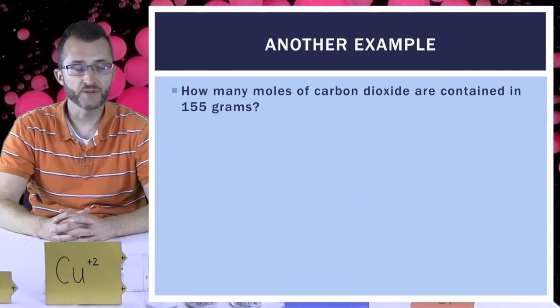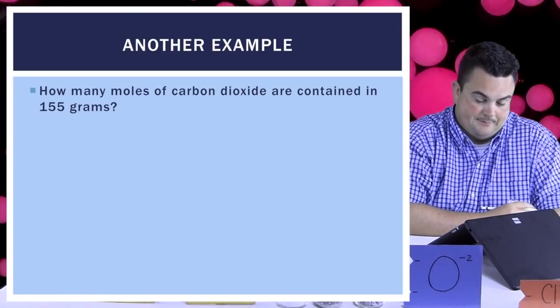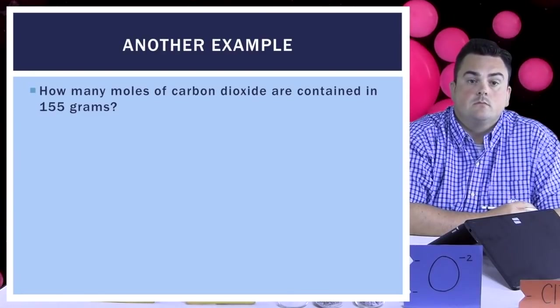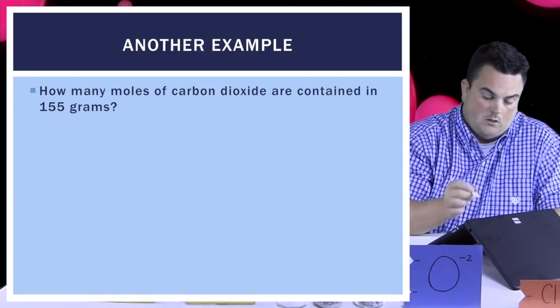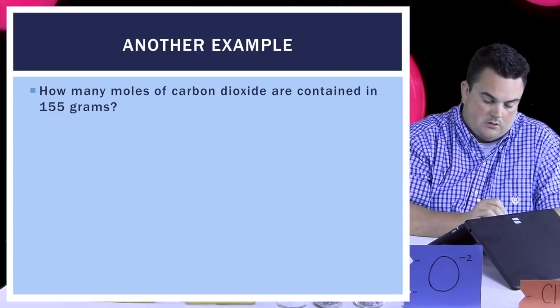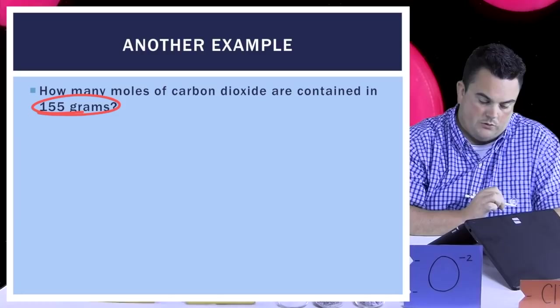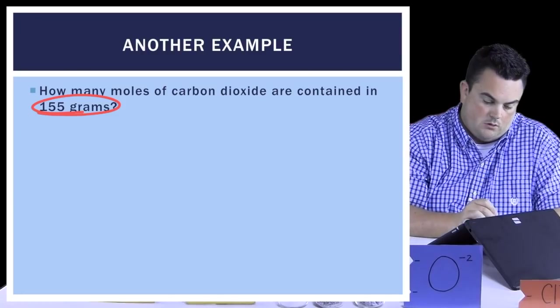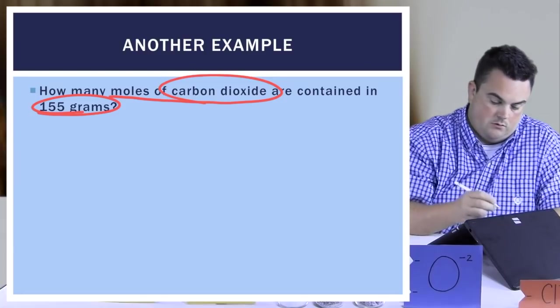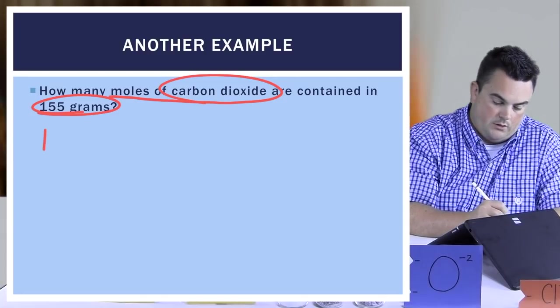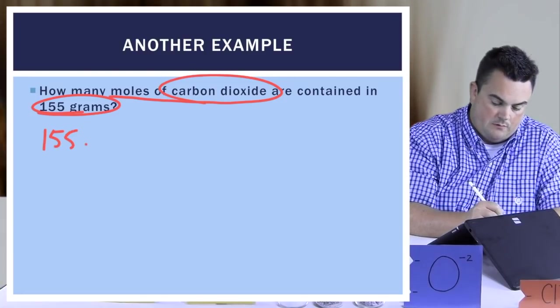Alright, we have another example. Are you ready, Fu? I am. How many moles of carbon dioxide are contained in 155 grams? Alright. What's given to us in this problem? Our given is the 155 grams. Good. And what are we trying to find? Trying to find how many moles of carbon dioxide. Very good. Let's write down what we're given first. So 155 grams of CO2. Good. We got that label there.